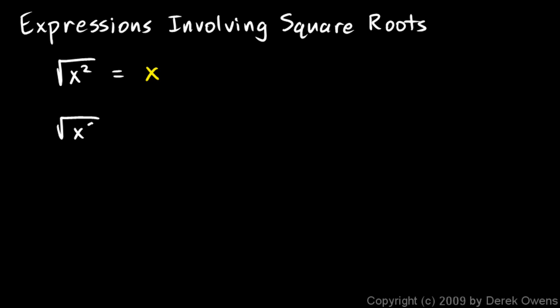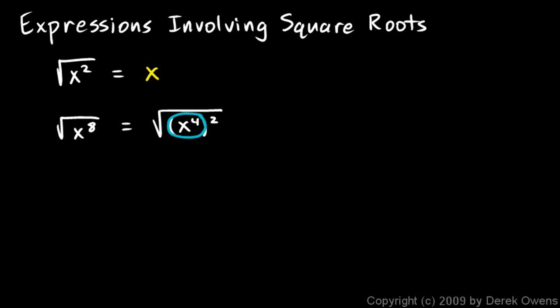The square root of x to the power of 8. Let's rewrite x to the 8th so that it's written as something squared. x to the 8th can be written as x to the 4th squared. Remember the rules of exponents: if you have one exponent raised to another, that's equivalent to those two exponents being multiplied together. So x to the 4th to the power of 2 is the same as x to the 8th. Writing it this way, the square root of something squared is just that thing, so the answer is x to the 4th.